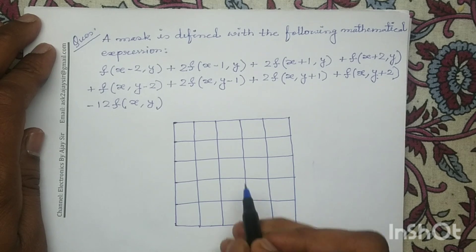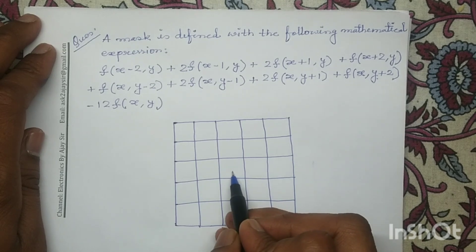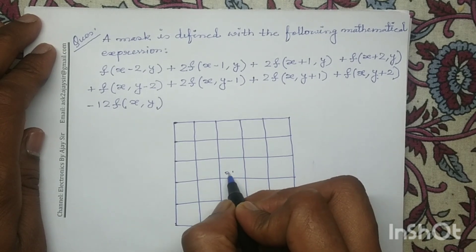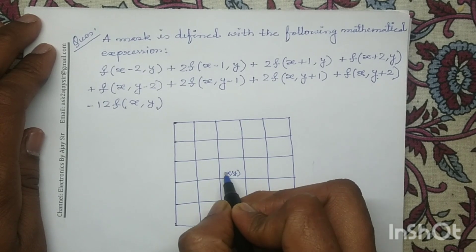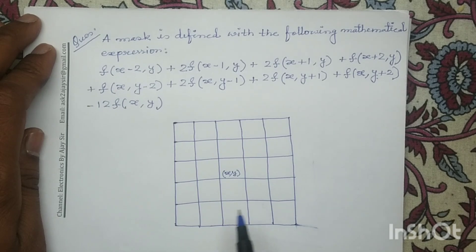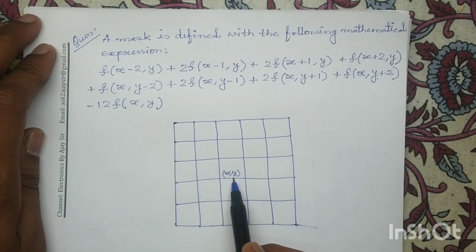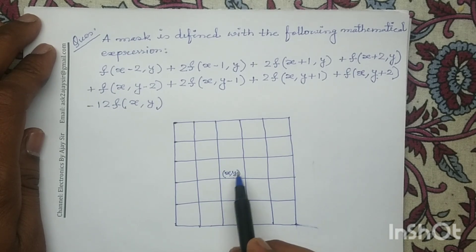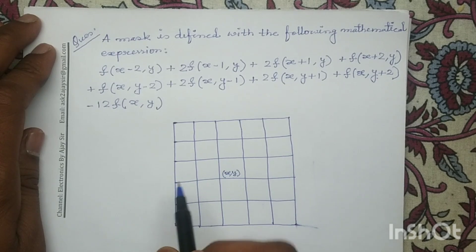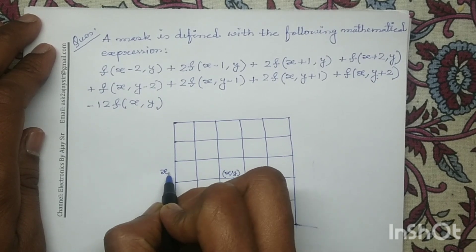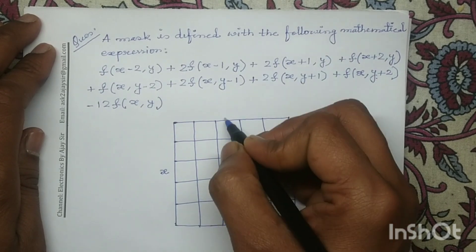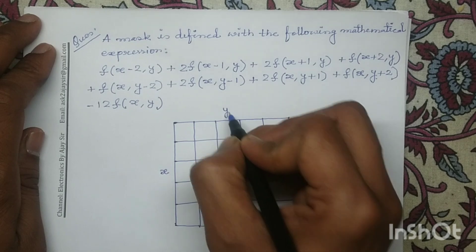We will assign the center pixel with the coordinate (x, y) by writing the coordinate x comma y in the center. This means this row will be assigned with x and this column will be assigned with y.